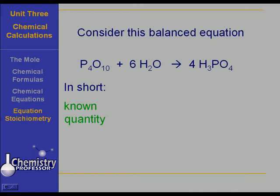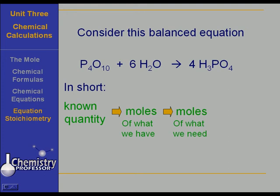In short, we start out with a known quantity of a material, perhaps P4O10, it could be anything. We convert that to moles of that known quantity. Sometimes we even start out with moles of a quantity, which makes it easy because we're already part of the way along. We convert from the known quantity to moles of what we have, and from there we go to moles of what we need or what we're looking for. And if necessary, then we change that to the quantity of what we need.